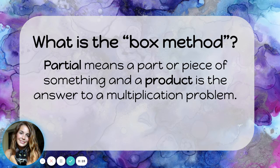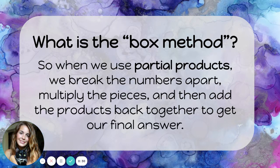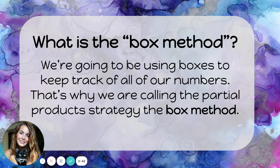Partial means a part or piece of something, and a product is the answer to a multiplication problem. So when we use partial products, we break the numbers apart, multiply the pieces, and then add the products back together to get our final answer. We're going to be using boxes to keep track of all of our numbers — that's why we're calling the partial product strategy the box method.